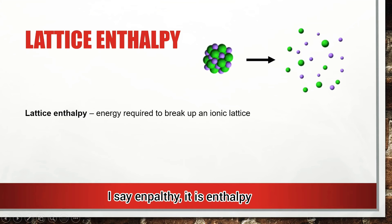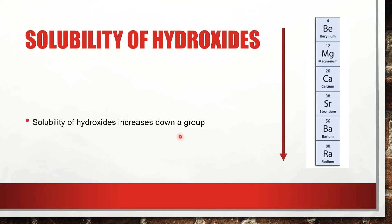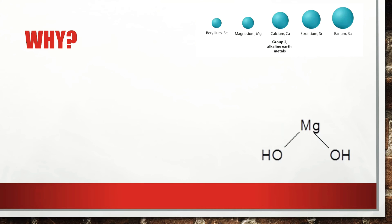The solubility of Group 2 hydroxides increases as you go down the group. So radium hydroxide is more soluble than calcium hydroxide, and calcium hydroxide is more soluble than beryllium hydroxide. We need to understand why the solubility of Group 2 hydroxides increases as we go down the group.